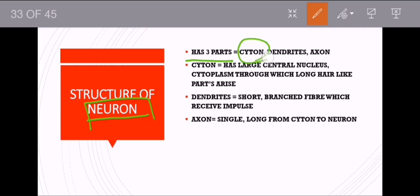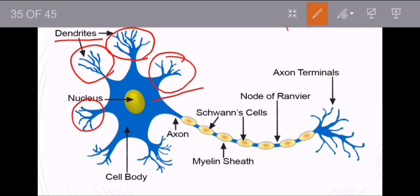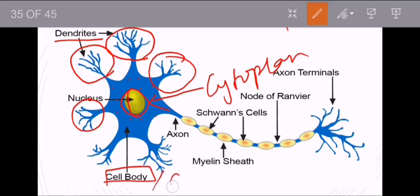The cyton or cell body has a large central nucleus and cytoplasm, from which long hair-like parts arise — these are called dendrites. These short branch-like fibers arising from the cell body are called dendrites. The nucleus and cytoplasm together form the cell body, which is also called the cyton.